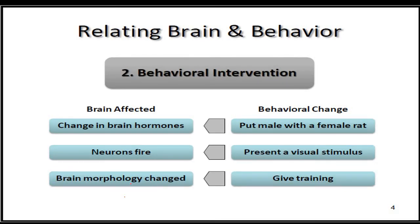Number two is behavioral intervention — the reverse direction. For a certain behavior, there will be a corresponding brain effect. For example, when you put a male with a female rat, the brain will be affected: there will be a change in brain hormones. There would be an instinctive sexual tendency, causing the brain to release various hormones to alleviate the need for sexual fulfillment.